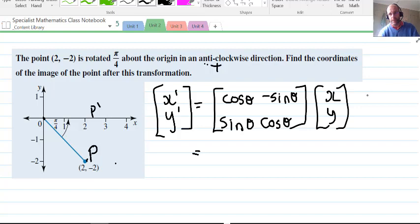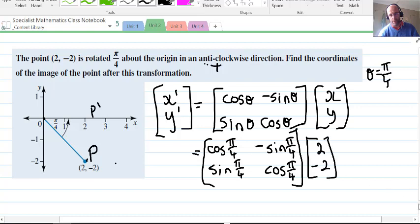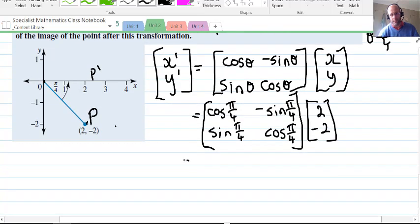So we've got cos(π/4), negative sin(π/4), sin(π/4), cos(π/4), and we have the point (2,-2). We use our matrix multiplication once we've evaluated these exact values.